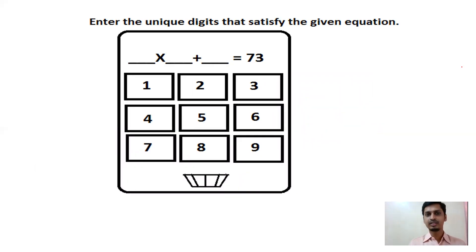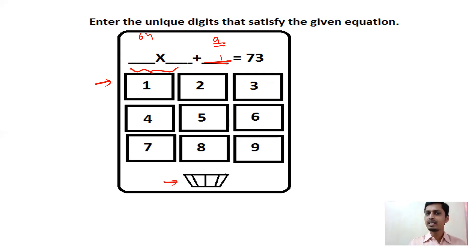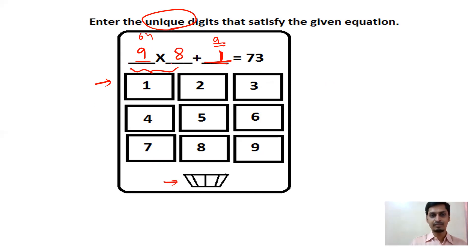This is the end of the second game — moving to the third game, which is a calculator-style game. You have: dash × dash + dash = 73. You fill digits 1 to 9 (no zero) using unique digits. Try 9 × 8 = 72, then 72 + 1 = 73. So fill 9 for the first dash, 8 for the second, and 1 for the last. That satisfies the equation and you move to the next level.